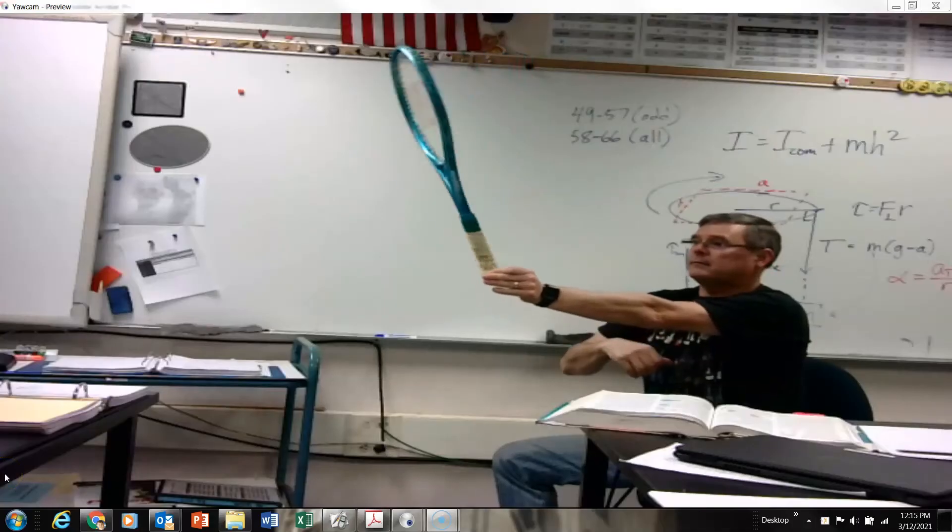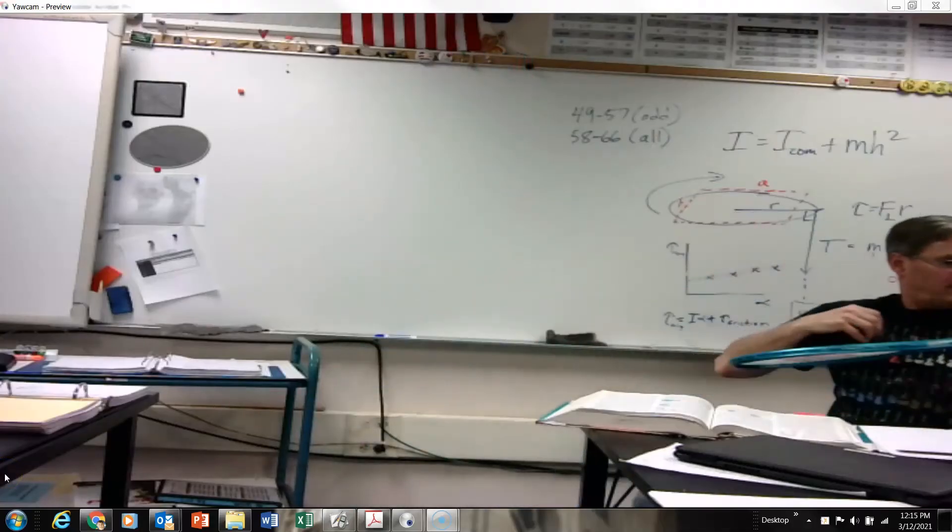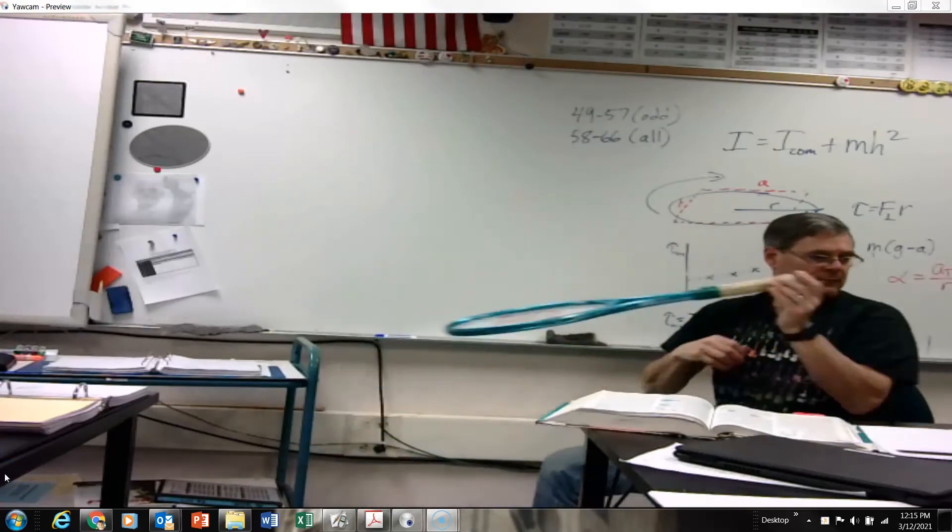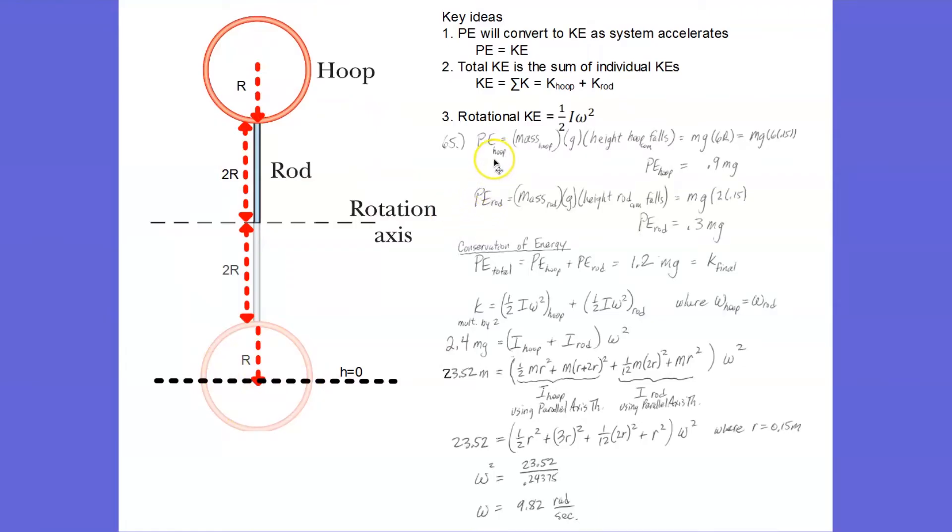This is not exactly the same, but you get the idea with this tennis racket rotating to the bottom of its swing. So first of all, gravitational potential energy we know is mass times gravity times height.